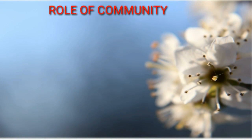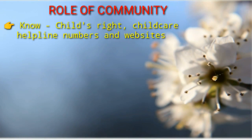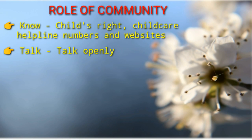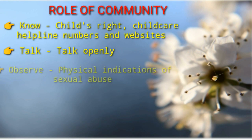Now let's discuss the role of the community. The first thing you need to do is know — know about children's rights, child care helpline numbers, websites — and ensure child safety in your family, neighborhood and community. The second thing you need to do is talk. Break the silence on child abuse and talk openly on this issue so that information and awareness passes from person to person.